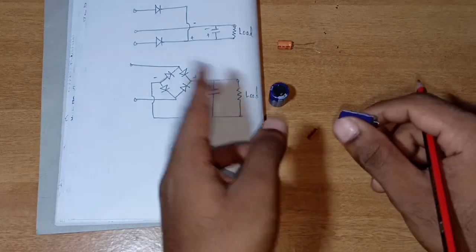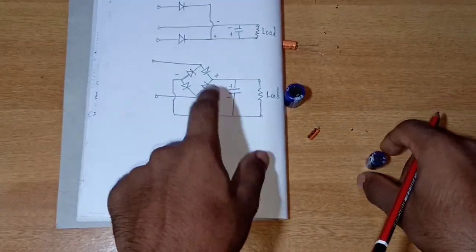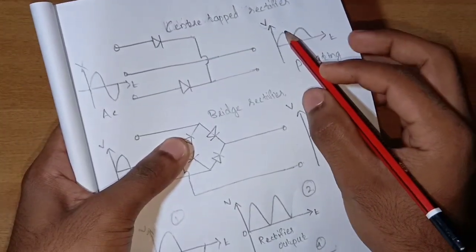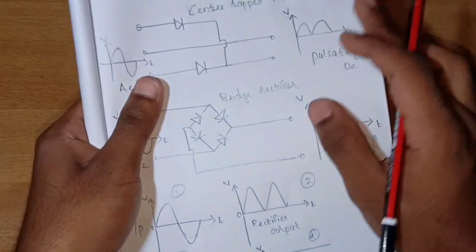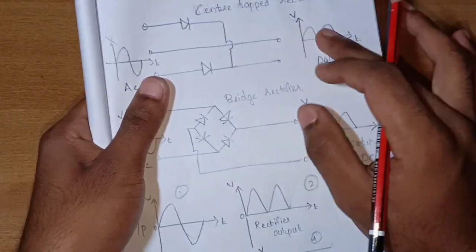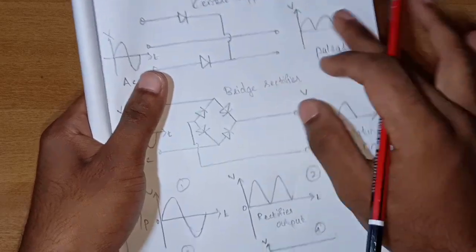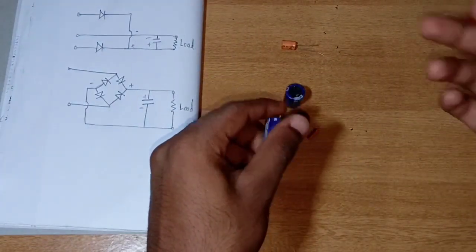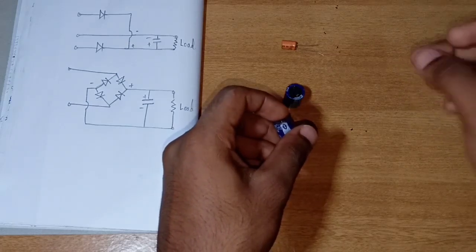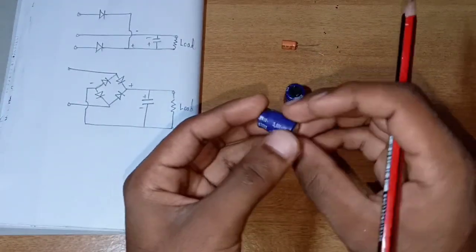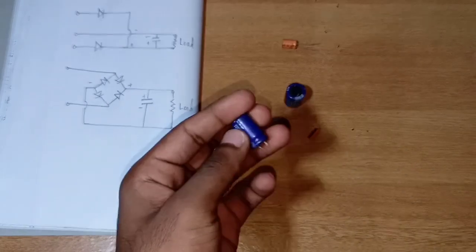The output of a rectifier with a 12V transformer is pulsating DC, and the peak level can reach up to 16V or 14V. Therefore, you should use a capacitor with double the voltage rating to ensure safe operation.